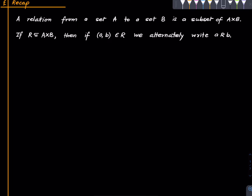Welcome to this primer on relations. We will continue our discussion. We discussed that a relation from a set A to a set B is just a subset of A cross B. It could be the empty set — the empty relation. A relation generalizes the notion of a function, and we saw other examples.